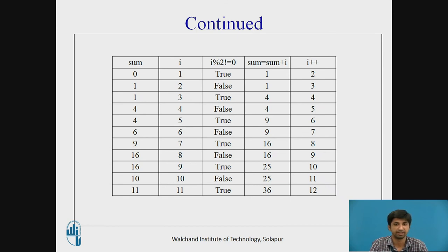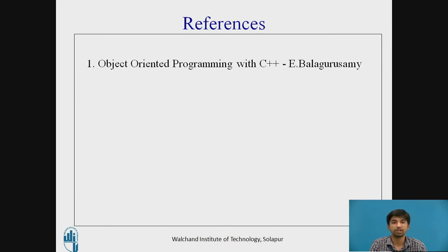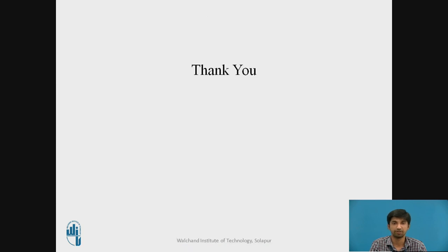Continuing the trace: i = 7, odd — true — sum = 9 + 7 = 16. i++ → i = 8, even — false — sum stays 16. i++ → i = 9, odd — true — sum = 16 + 9 = 25. i++ → i = 10, even — false — sum stays 25. i++ → i = 11, odd — true — sum = 25 + 11 = 36. So the sum of odd numbers 1 + 3 + 5 + 7 + 9 + 11 = 36. The reference for this lecture is Object Oriented Programming with C++ by E. Balagurusamy. Thank you.